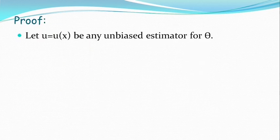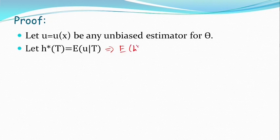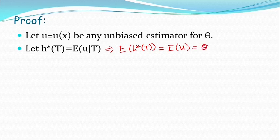Aamadhe h* of theta. Aamadhe t is equal to expectation of u given t — this is the Rao-Blackwell's theorem. We have both sides of the expectation. Expectation of h* of t is equal to expectation of u. This is u is unbiased estimator of theta. So this is equal to theta. The expectation of h* of t is unbiased estimator of theta. This is Rao-Blackwell's theorem.